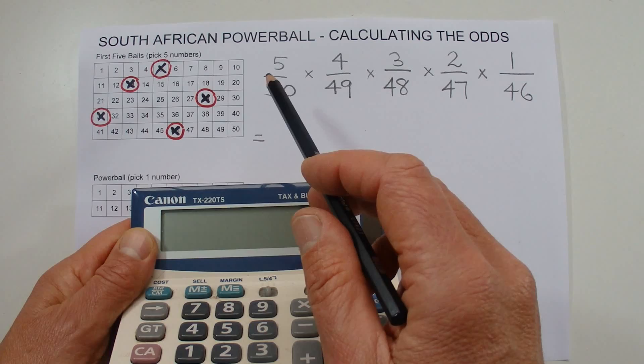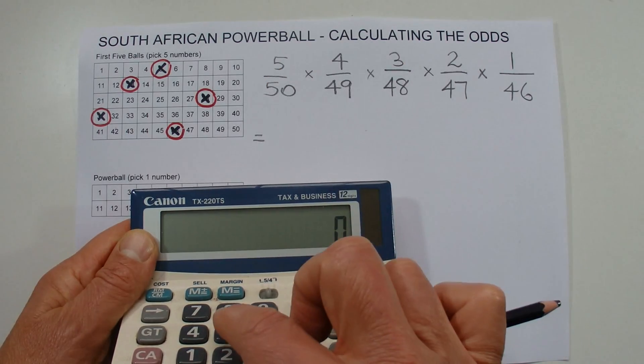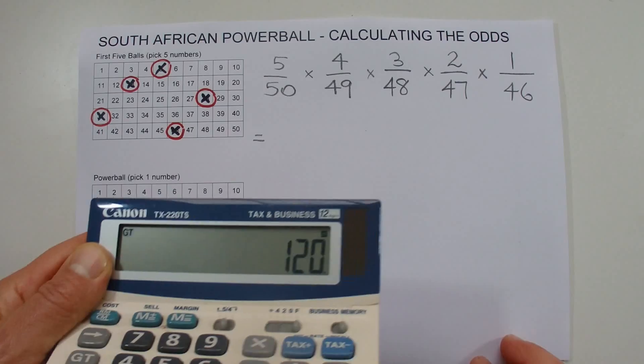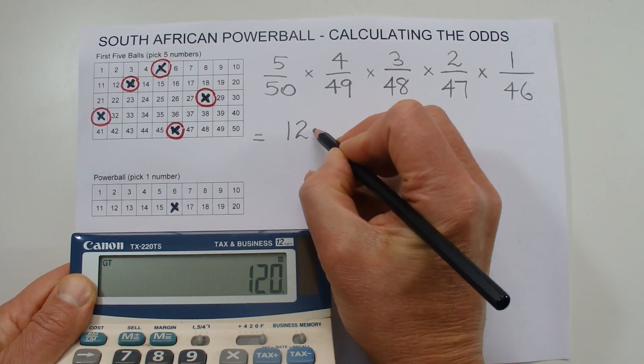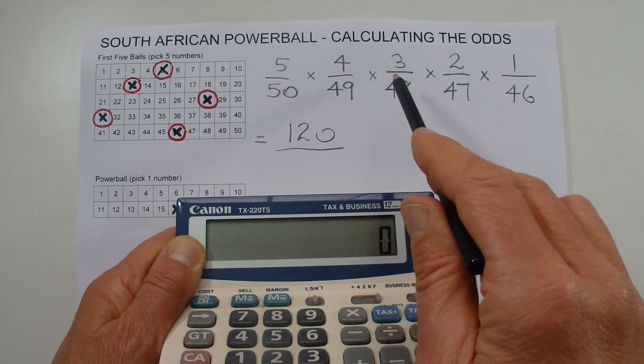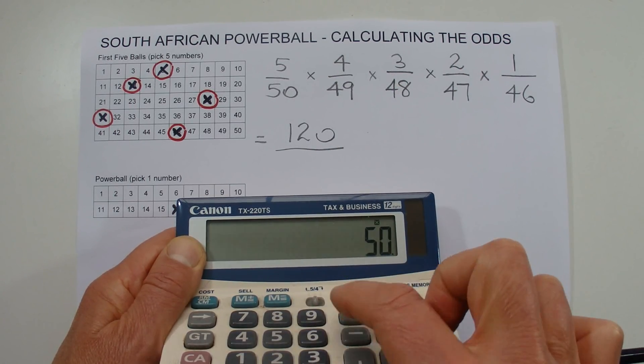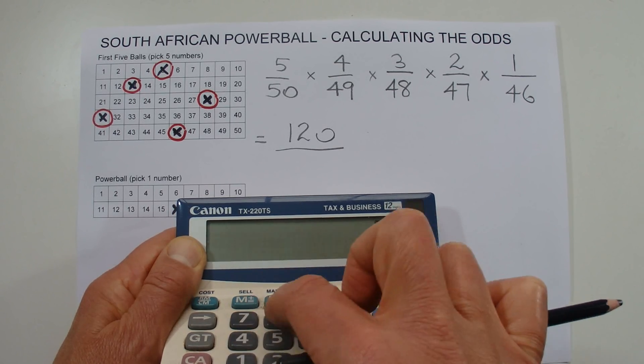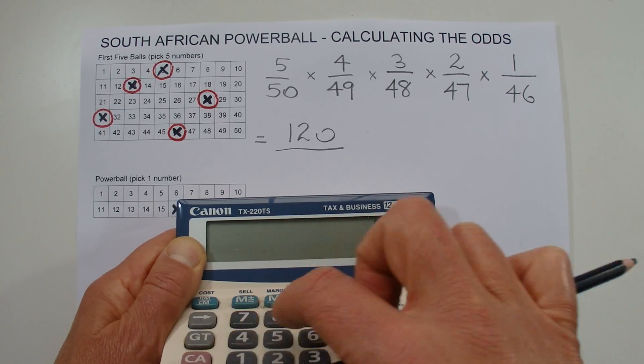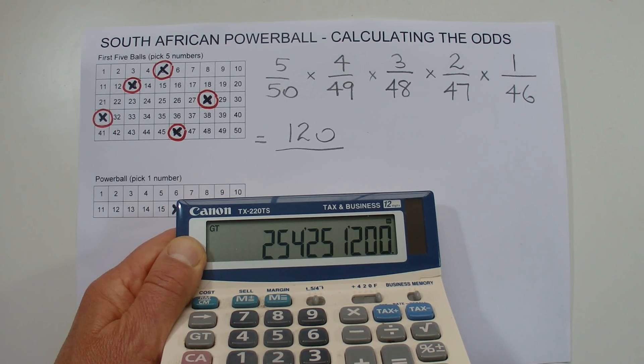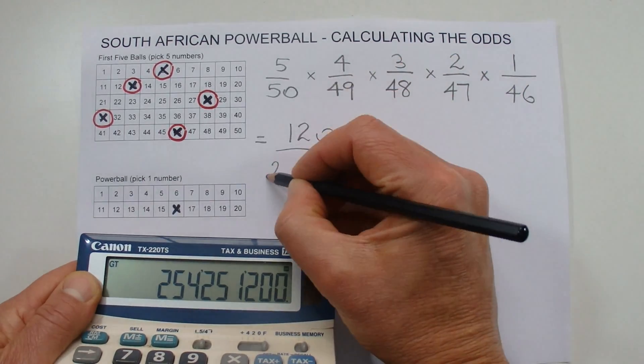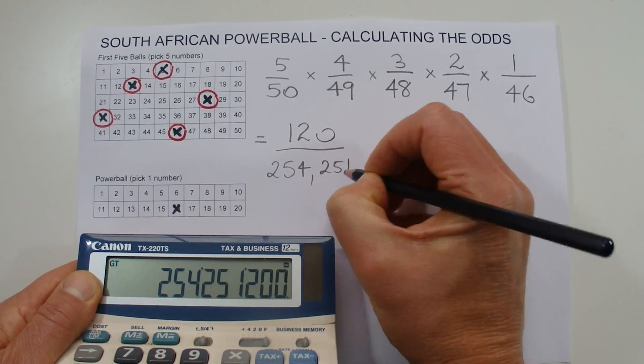So I've got out my trusty calculator. I'll just multiply out those top row of numbers: five times four times three times two times one, and that gives you 120. So you've got 120 chances. And now you've got to multiply out the bottom row of numbers: 50 times 49 times 48 times 47 times 46. That equals 254,251,200.